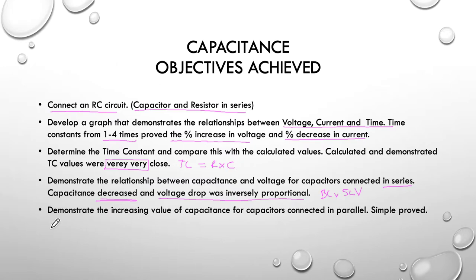Then finally, we demonstrated the increasing value of capacitance for the capacitors connected in parallel was simply proved. So, we clearly demonstrated for our three capacitors that CT = C1 + C2 + C3 allowing a little bit of give and take for our plus and minus 10% on each of our capacitors.